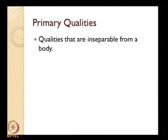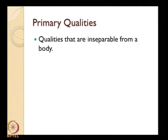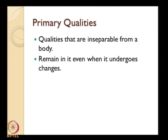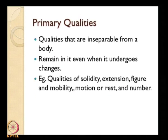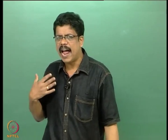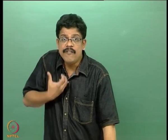What are primary qualities? Primary qualities are qualities that are inseparable from a body — they are inherent in the body, without which you cannot conceive that body, and they remain in the body even when it undergoes changes. You cannot separate them from it. Examples of primary qualities: solidity, extension, figure, mobility, motion or rest, and number — all of which Locke conceived as inseparable from the object. They are original or primary qualities of the body — they are in the body, not attributed by us or resulting from our perceiving them in a certain way.